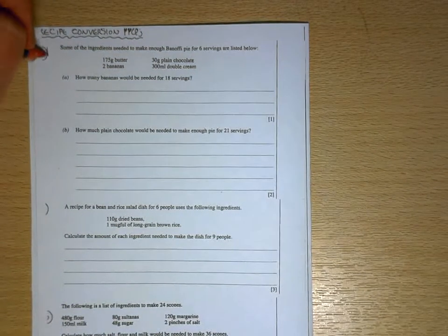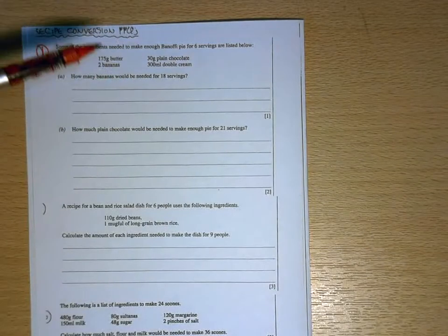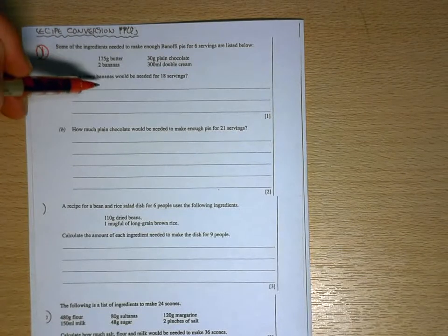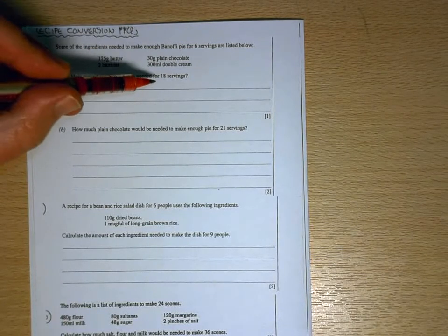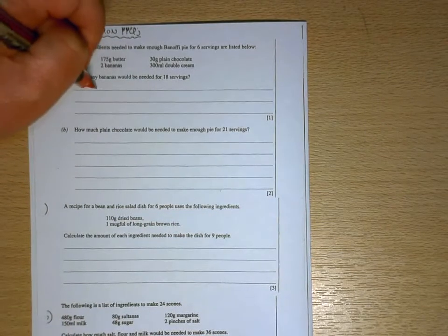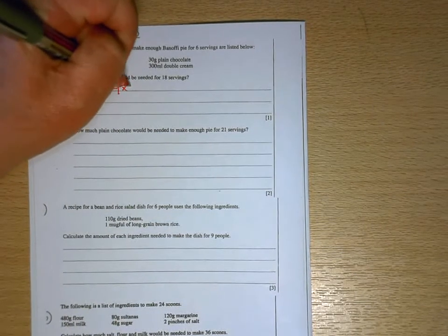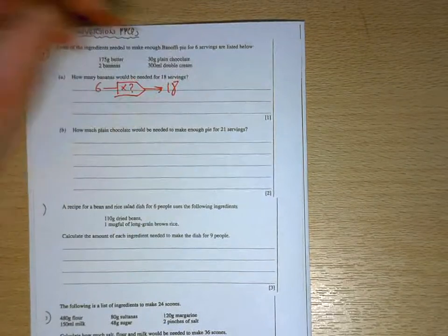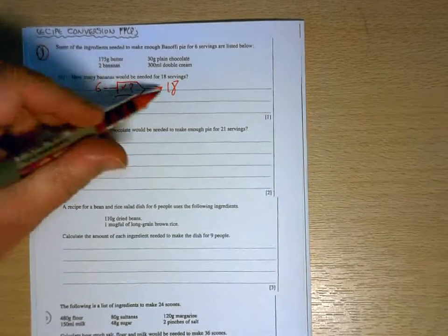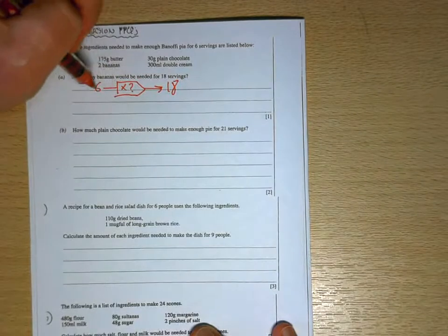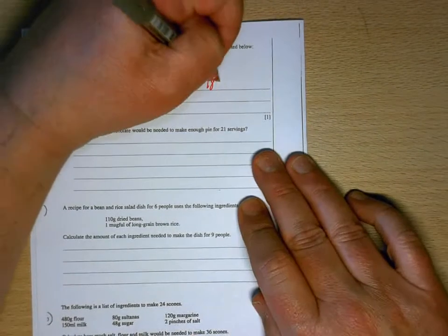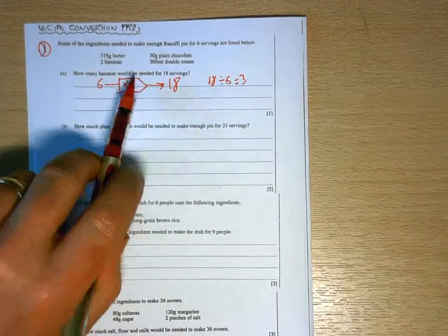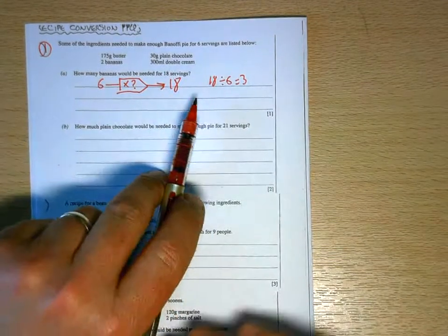In this first question we've got a recipe here that will make banoffee pie for six servings and the first thing we have to do is to change that to provide for 18 servings. So what you want to do is work out how many times you have to increase the recipe by to go from 6 to 18. And the way that you would do that would be to do 18 divided by 6. 18 divided by 6 gives you 3. So 6 times 3 is 18. So everything in this recipe has to be multiplied by 3.